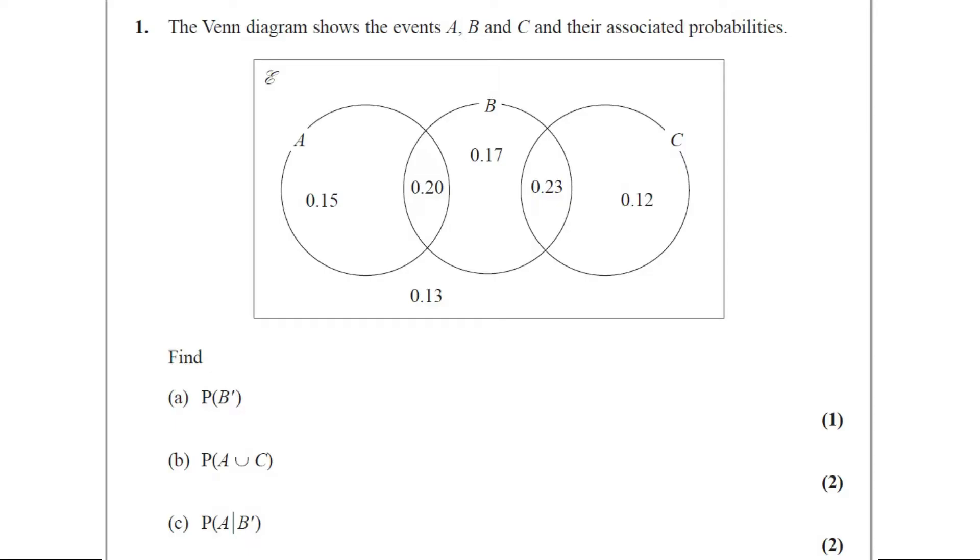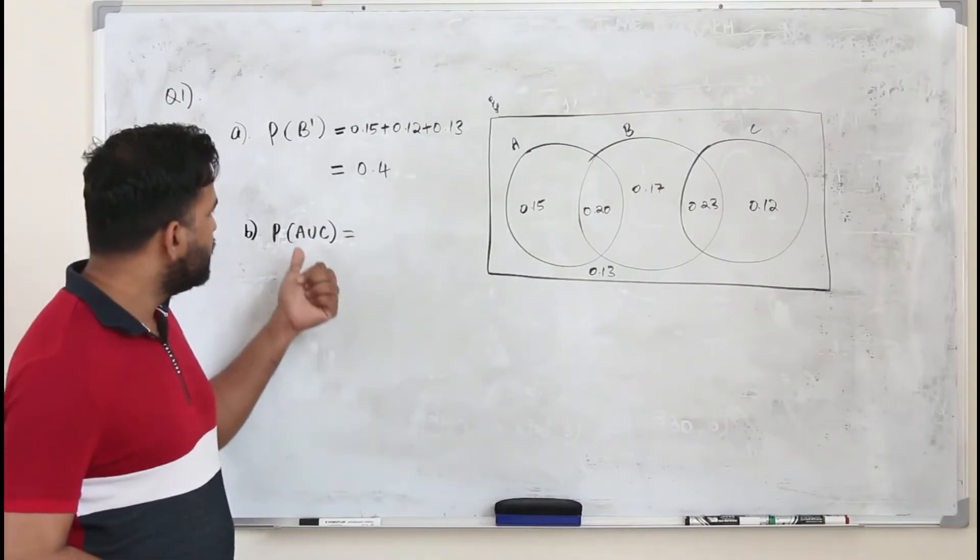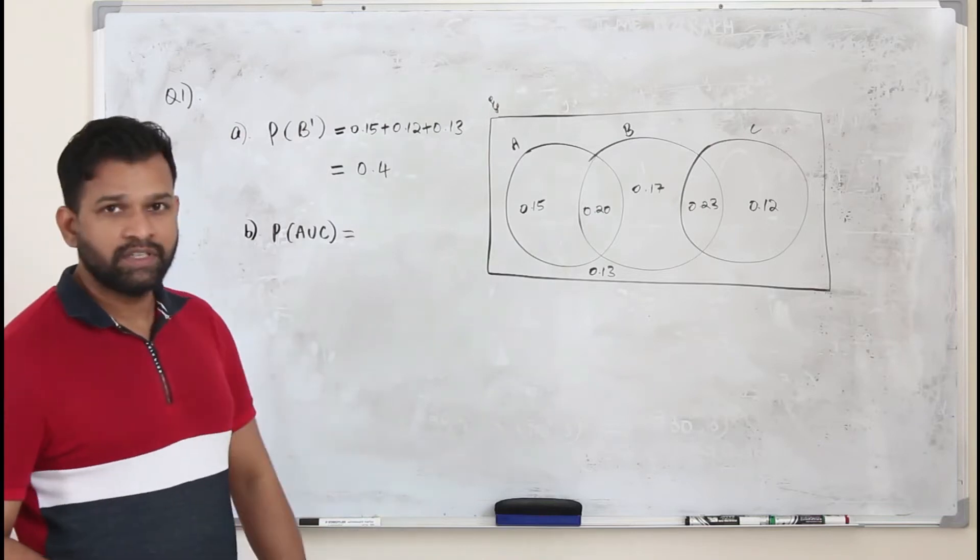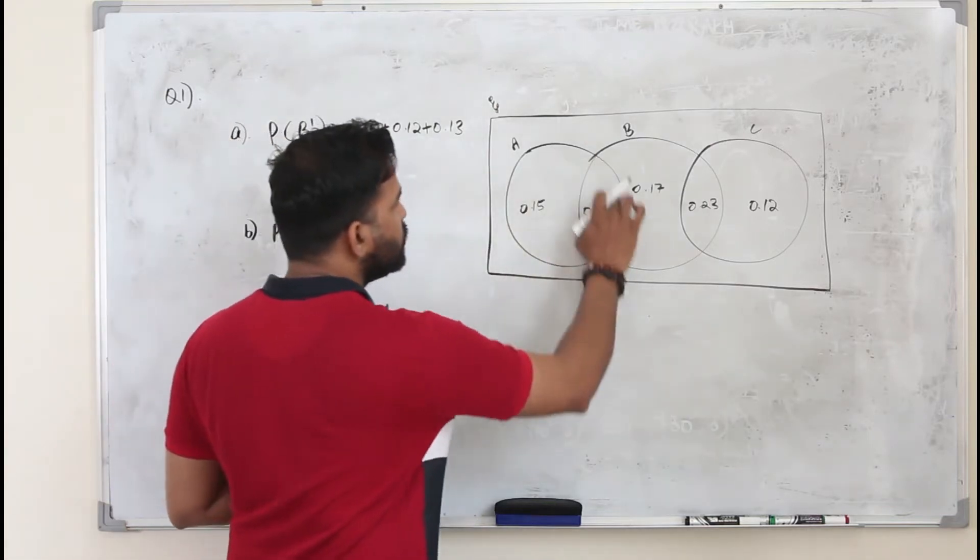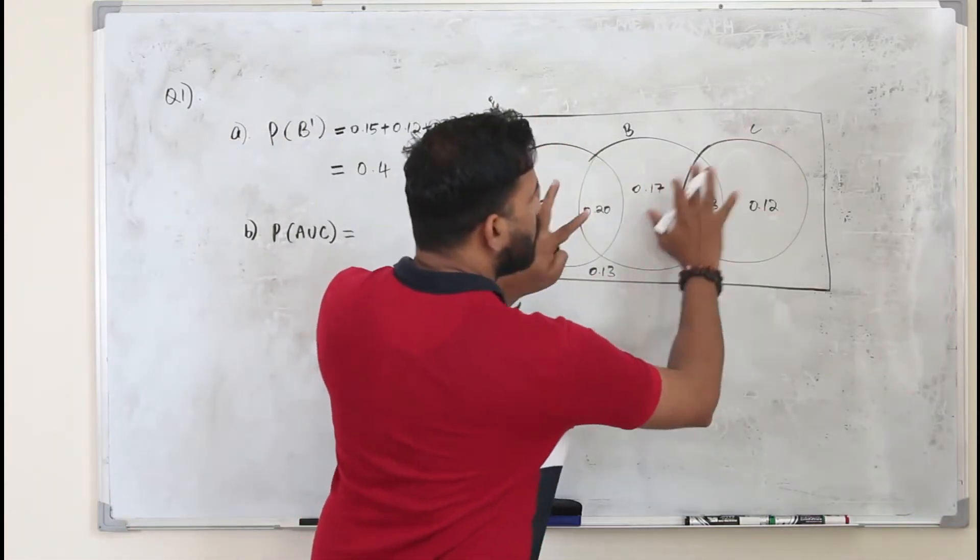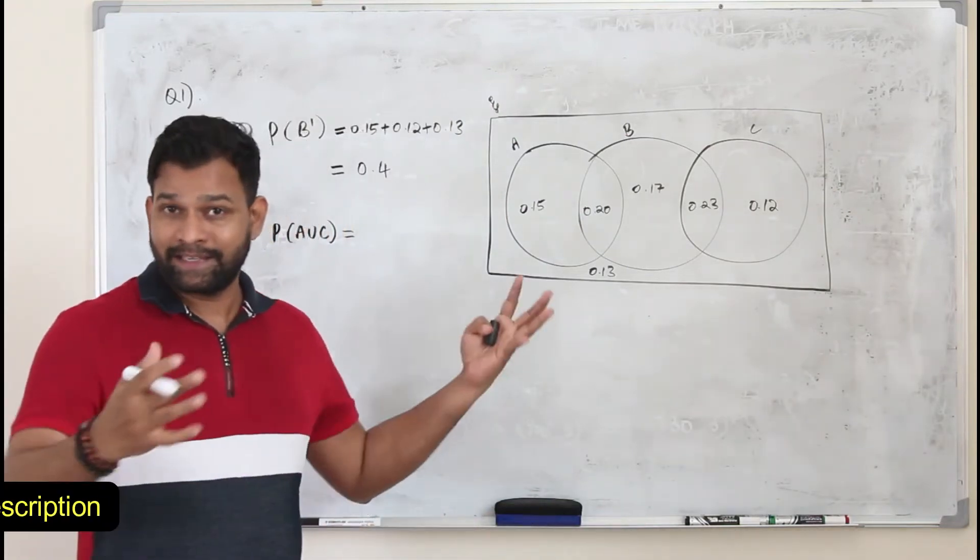Part B. Find P of A union C. This question got two marks. In part B, they want you to find probability of A union C. If you look at A and C, these two are non-overlapping circles, mutually exclusive events.